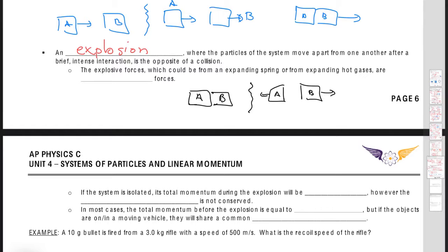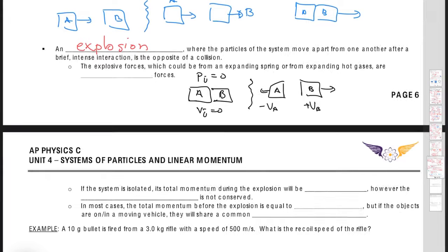So what happens is typically the initial velocity of the system will be zero, which makes the initial momentum zero. And then we know that A would have a negative velocity and B would have a positive velocity, because we always make the assumption that positive is going to point to the right.